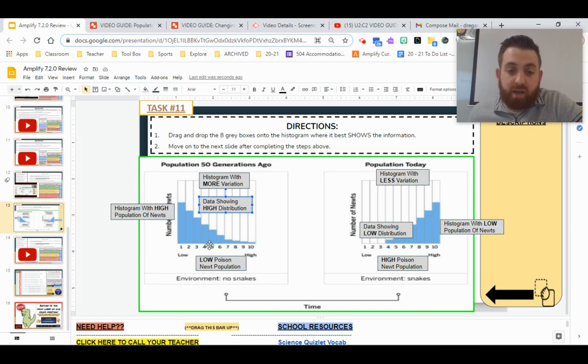So we could infer that based on all these variations having data, there's probably more newts, higher population of newts in this one versus this one.